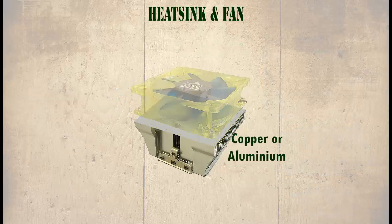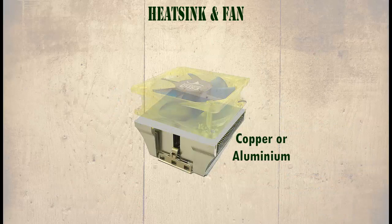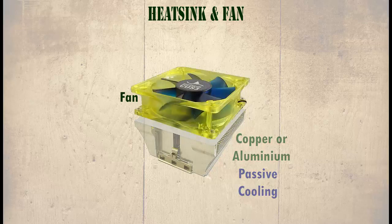The heat sink is usually made from copper or aluminium and sits on top of the CPU to draw the heat. The heat sink itself contains no moving parts and does not require power — it is known as a passive cooling solution. The fan sits on top of the heat sink to blow the heat away, and as it contains moving parts and requires power it is known as an active cooling solution.